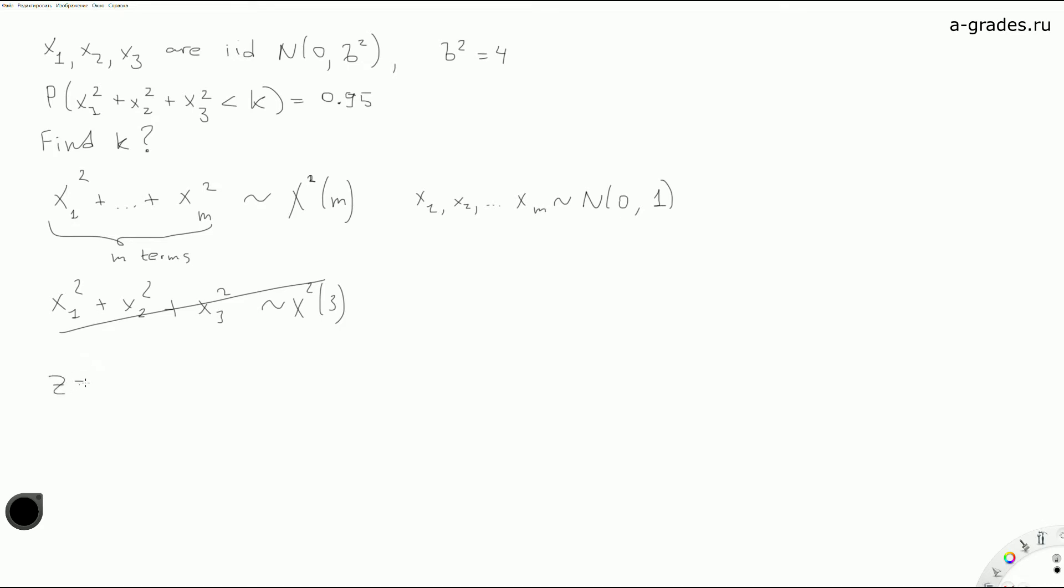How do we do this? Well, we remember that a standard normally distributed variable equals this expression. In our case, we can say that for each x, if we divide this x by two, where two is the square root from four, then we get standard normal distribution. So if we divide this expression by four...